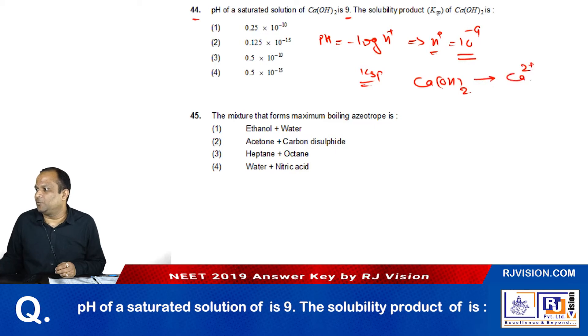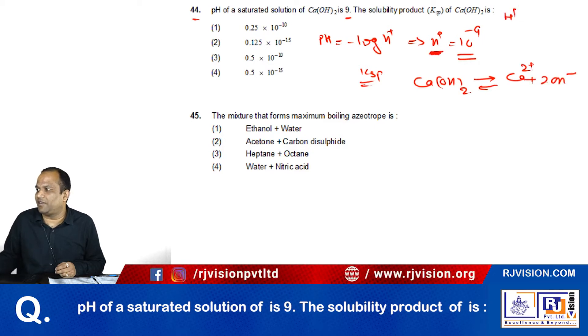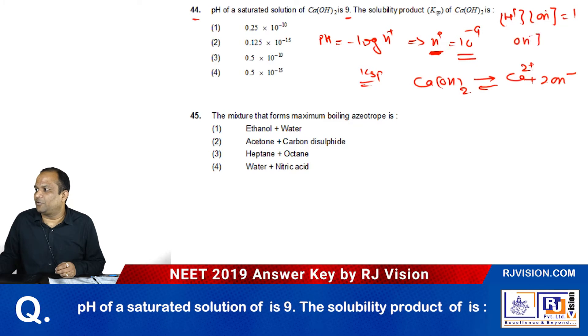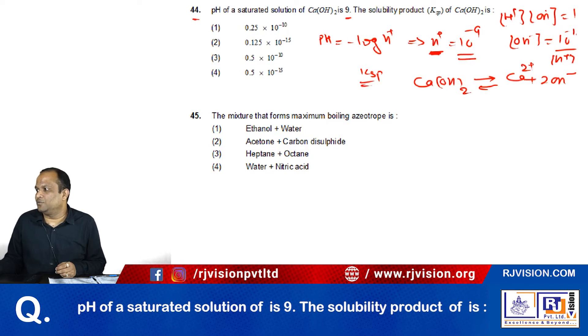Because we have the value of H plus ion, we can find out H plus ion multiplied with OH minus ion equals 10 raise to the power minus 14. Therefore, OH minus ion present in solution is 10 raise to the power minus 14 divided by H plus, which equals 10 raise to the power minus 14 divided by 10 raise to the power minus 9, which equals 10 raise to the power minus 5. So the concentration of OH ion is this.